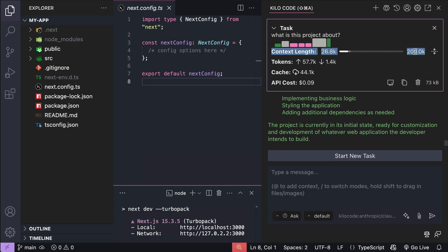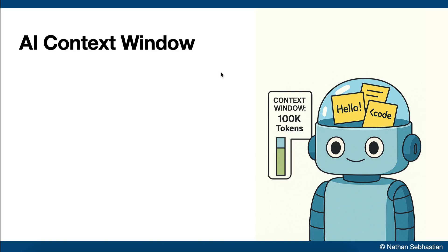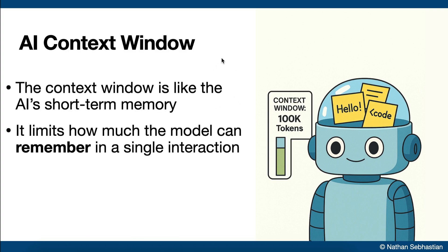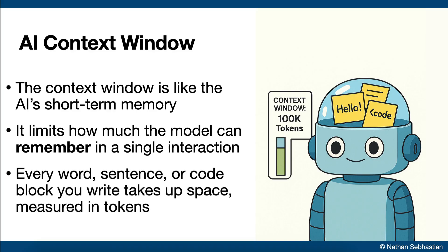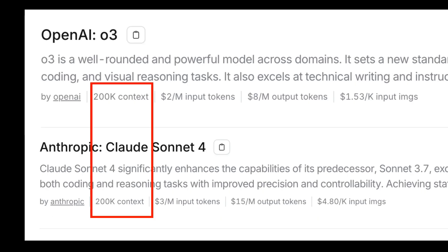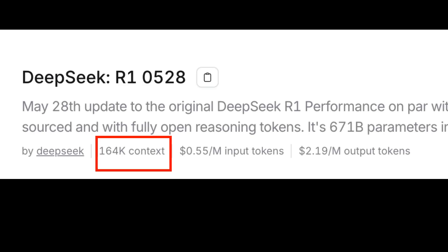Now that we know about input and output tokens, one more interesting point in this detail is the context window. The context window is like the AI's short-term memory — it's the limit of how much information the model can keep in mind at once. Everything you say, every word, sentence, or code block takes up space in this memory, and that space is measured in tokens. Different AI models come with different context window sizes. For example, the latest Gemini models support up to 1 million tokens, while Claude and O3 models handle around 200k tokens, and DeepSeek R1 comes in at 164k tokens.